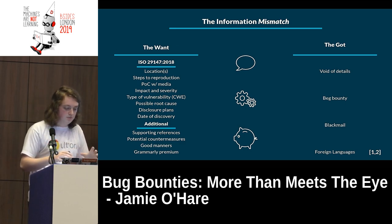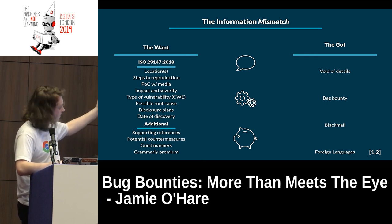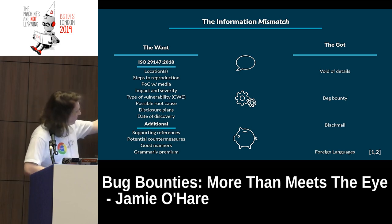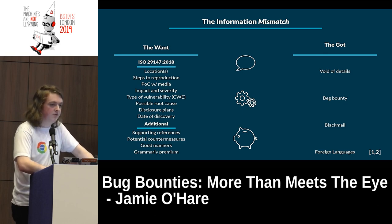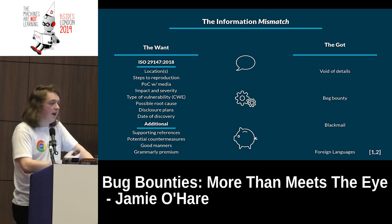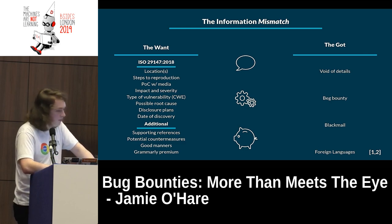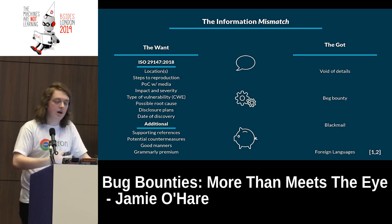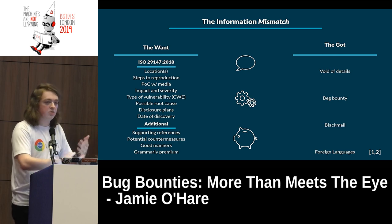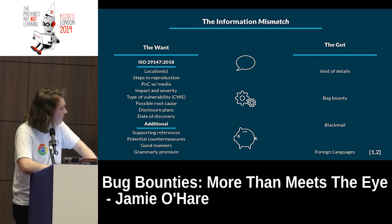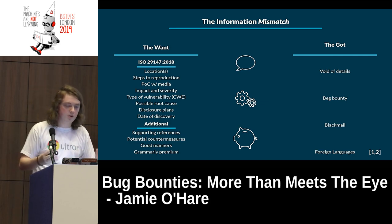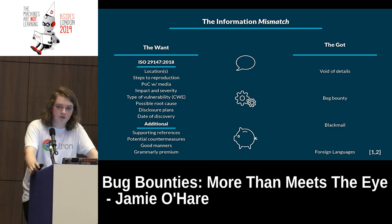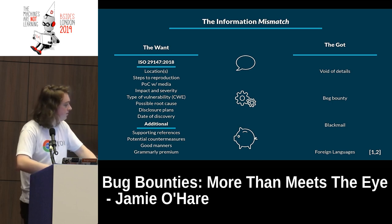But we don't live in a perfect world — the information mismatch exists, so instead of what you want, you get what you got. The 'got' includes a void of details, and beg bounties — where people think they've found a vulnerability but it's too mundane to really exploit, and they beg for money. A more escalated version is blackmail, which happens more in bug bounties because of the monetary reward. That's what happened with Uber and their 10k maximum — they got blackmailed for 100 grand. And lastly: foreign languages, a sad reality of the worldwide reach of bug bounties, since it's infeasible to hire trilingual triagers for all major languages.